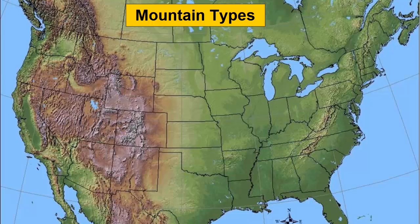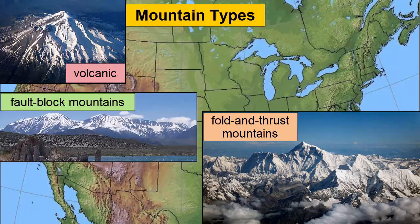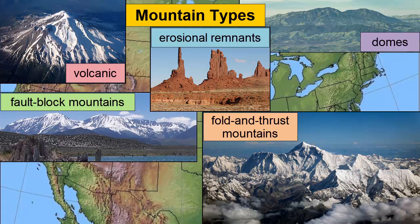In summary, any landform that sits higher than its surroundings — what we call a mountain — can be classified as either volcanic, compressional fold and thrust mountains, tensional fault block mountains, domes, or erosional remnants. The variety of shapes they display comes from a combination of the forces that push the land up, the erosional forces that sculpt it down, and the hardness of the rock that sits within the mountains. Combined, these create the variety of mountains we see across our planet.